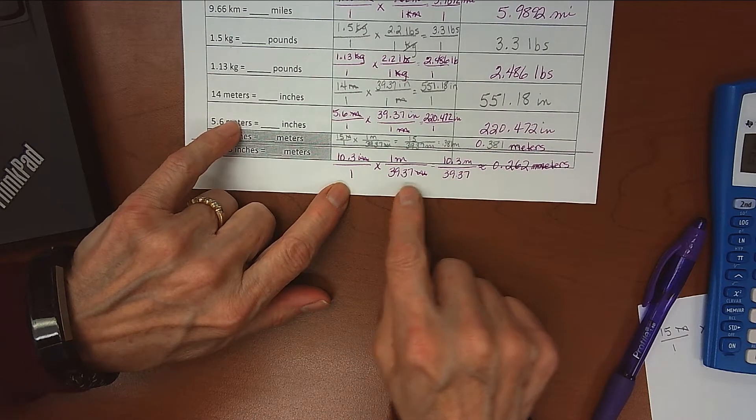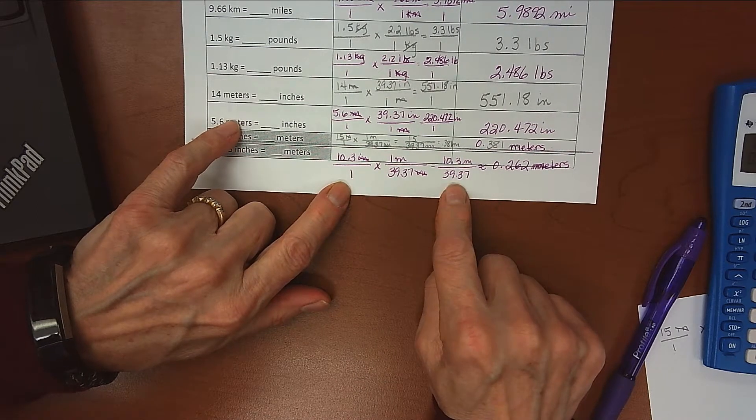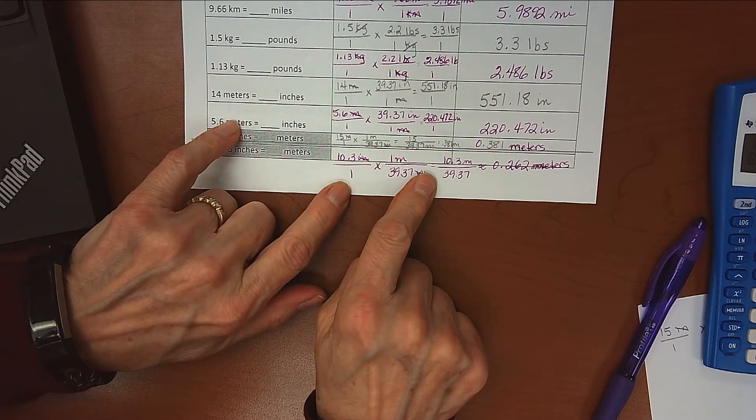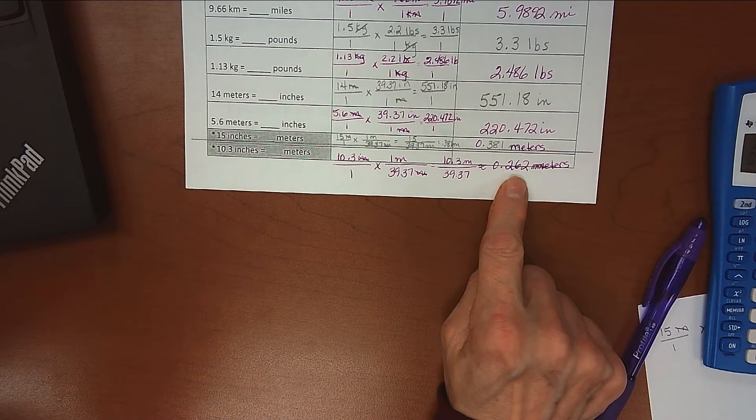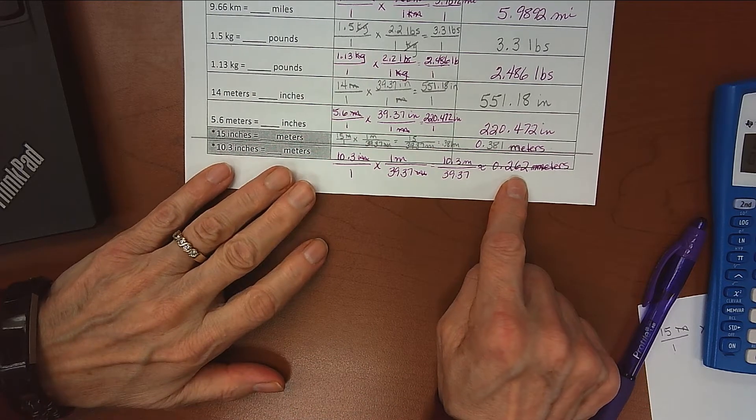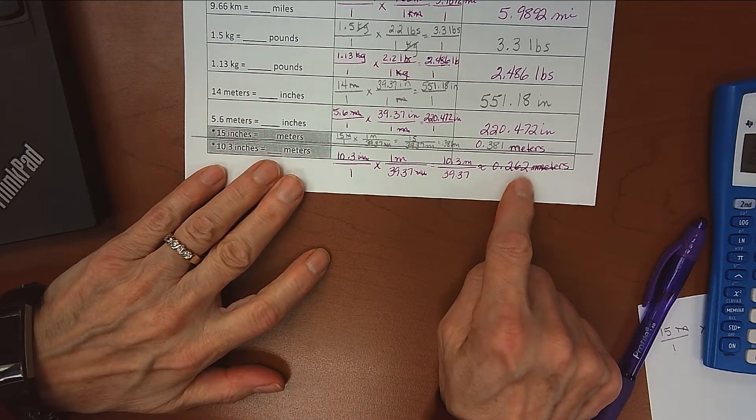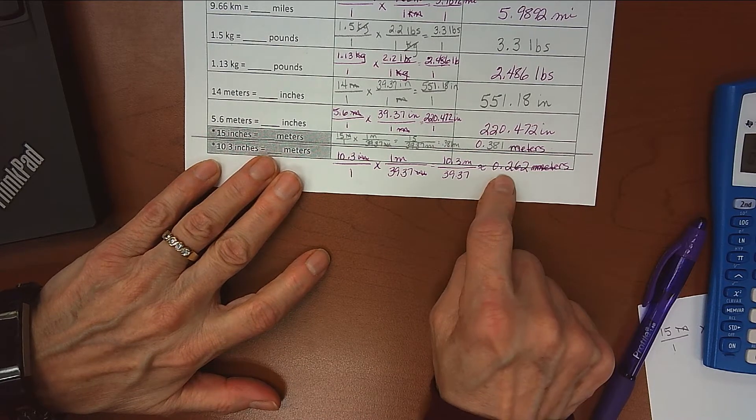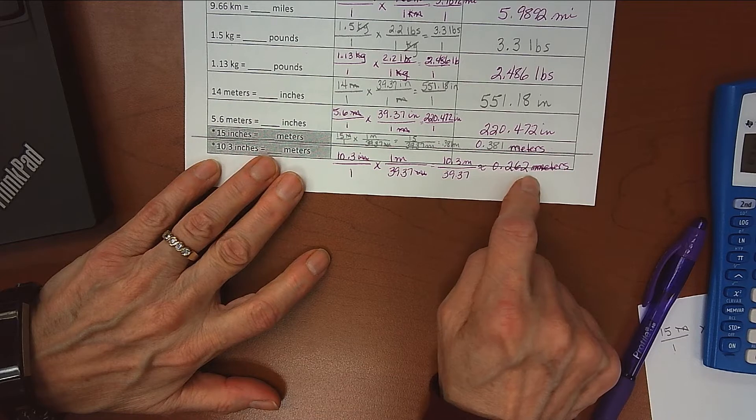And 1 times 39.37 is 39.37, and you just do that division: 10.3 divided by 39.37. This is rounded - I came up with a very long number in my calculator and I rounded it to the thousandths place, so 0.262 meters.